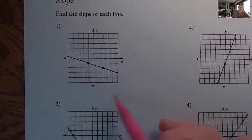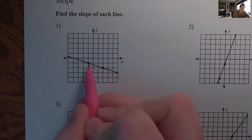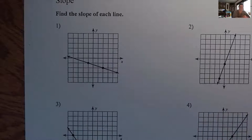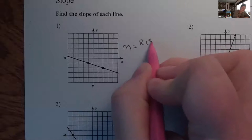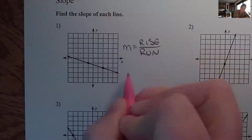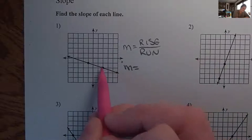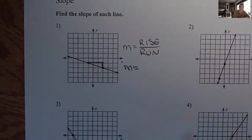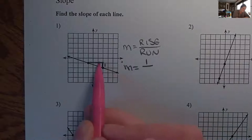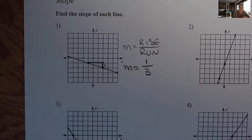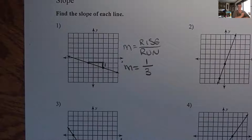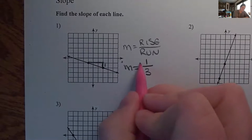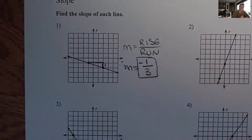This first example gives us a graph with two points marked. Remember slope is your rise over your run. We went up one block, so one goes on top — that's the rise. We went over one, two, three — three is the run. Then ask yourself: if I was driving a little matchbox car from left to right, am I going uphill or downhill? This one's downhill, so the answer is negative one-third.